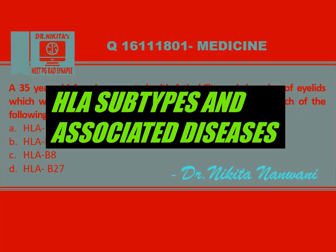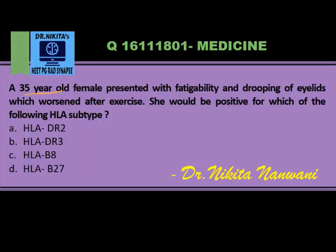Here we have a 35-year-old female who has presented with fatigability and drooping of eyelids, which worsens after exercise. The most important clue is that it worsens after exercise, which gives away the diagnosis of myasthenia gravis.